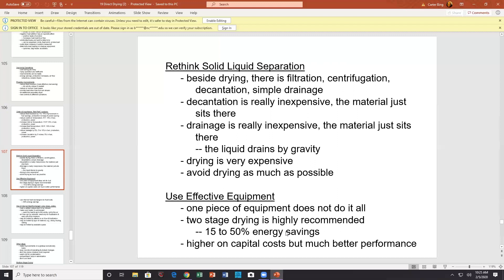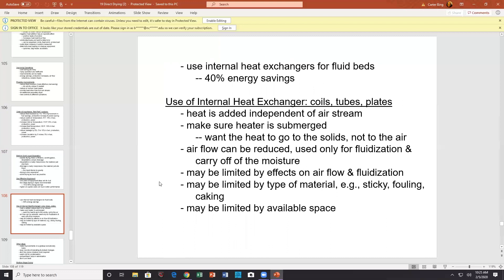Effective equipment. One piece of equipment does not do it all. Two-stage drying is really great. Higher capital costs, but better performance. Internal heat exchangers, 40% energy savings. Use of internal heater. Possible heat is added, independent of air stream. Make sure the heater is submerged. You don't want the heat to go to the air. You want the heat to go to the solids. Air flow rate can be reduced. Can be used for fluidization, carry off moisture. May be limited by the effects of air. Fluidization may be limited by space.